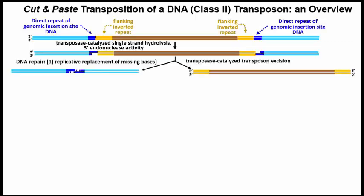The transposon is thus liberated from its locus in the genome — you see that at the right of this illustration. At the same time, the genomic DNA can come back together because of those complementary staggered ends. DNA polymerase next fills in the missing nucleotides, basically an example of DNA repair. DNA ligase then completes the repair of the genomic DNA.